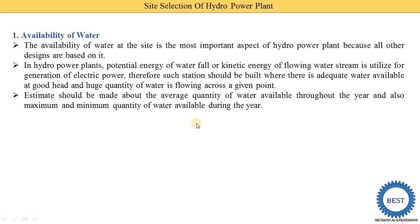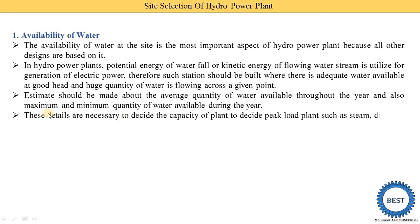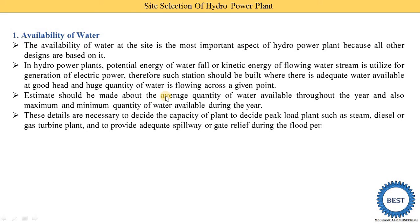This depends on the catchment area. We need to take data from the past 50 to 100 years of rainfall data — how much rain is coming in this catchment area — and on this basis they define the maximum and minimum quantity of water available during the year. These details are necessary to decide the capacity of the plant and to decide the peak load plant, such as steam, diesel, or gas turbine plant. Generally, hydropower plants are used as peak load power plants, and if used as base load plants, we need to decide the peak load power plants used alongside them.